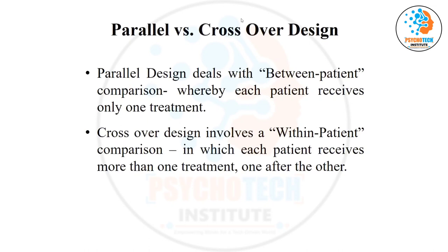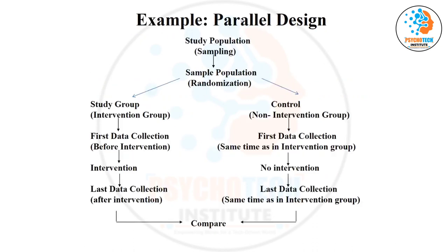Considering this concept, the randomized control trial is divided into two different designs: parallel design and crossover design. From the names it is clear — in parallel design, whatever treatment allotment a patient receives, they will only receive that one treatment. You randomize, one group is your study group and one is your control group, you give the intervention, then collect and compare data.